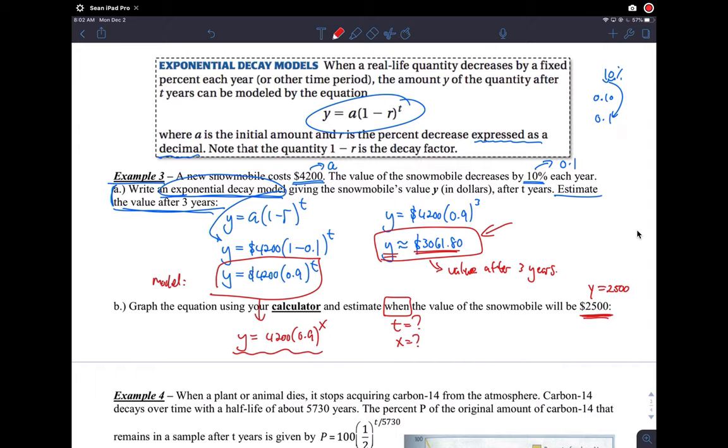And if you find the intersection between this function and the model, or this line and the model, you get an answer that is X, which is T, is about 4.9 years. About 4.9 years. All right. So that's example three.